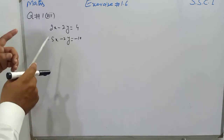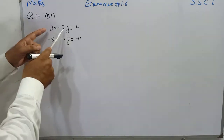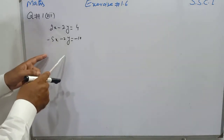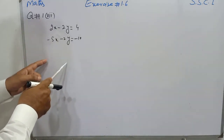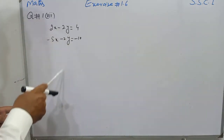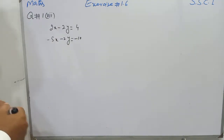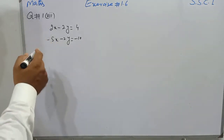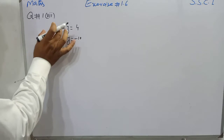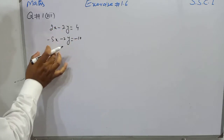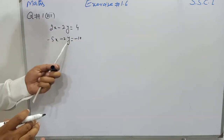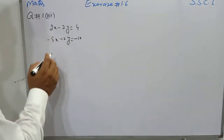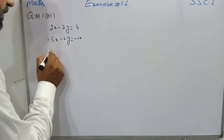Students, you know very well that the coefficients of both variables are written in the matrix and given the name as matrix A. So first we will write the two equations in matrix form, noting the number of variables in the matrix.